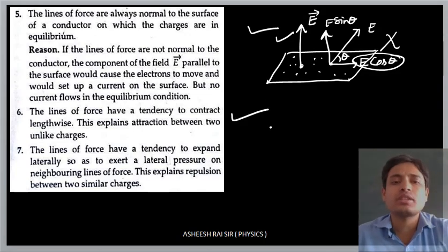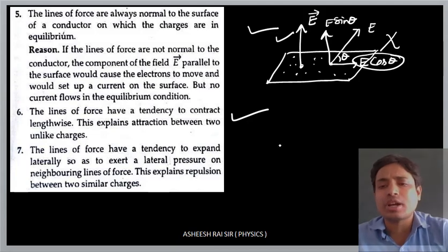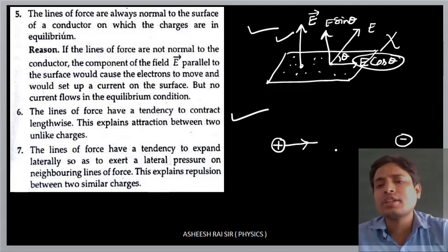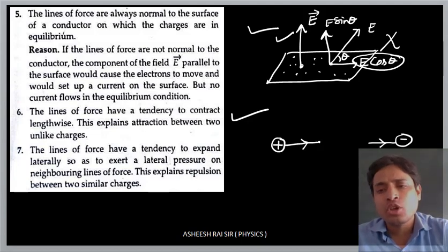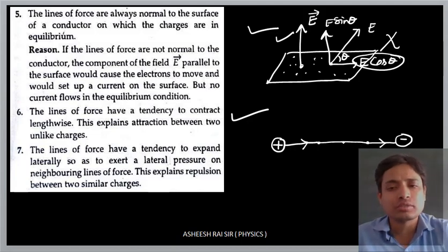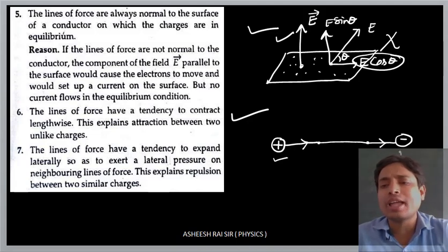Property number six: the lines of force have a tendency to contract lengthwise. This explains the attraction between two unlike charges. Suppose there is a positive charge and a negative charge. The electric field lines start from the positive charge and end at the negative charge. When these lines meet along their length, they join and attract each other. This shows the force of attraction between unlike charges.